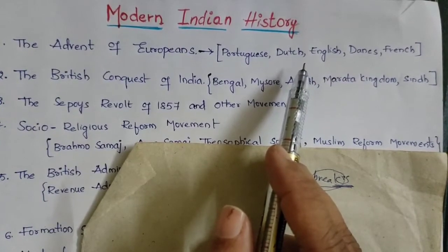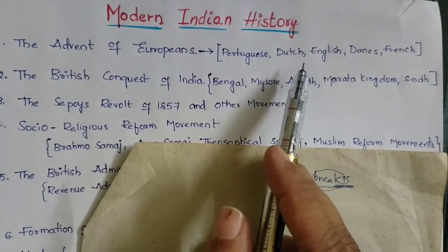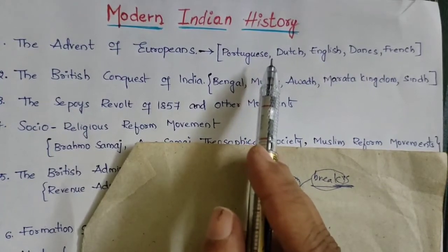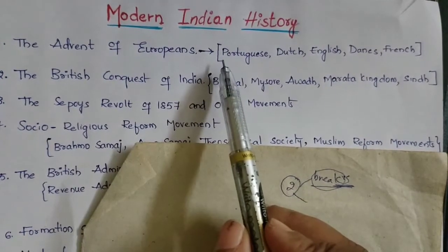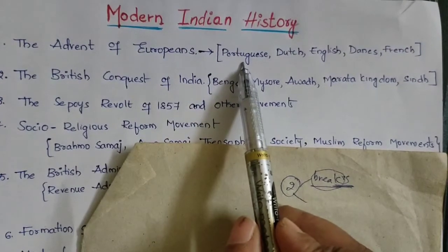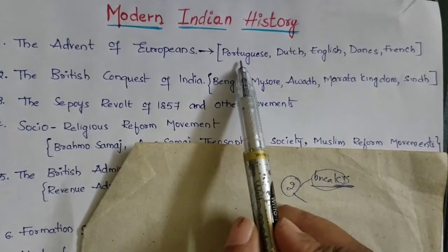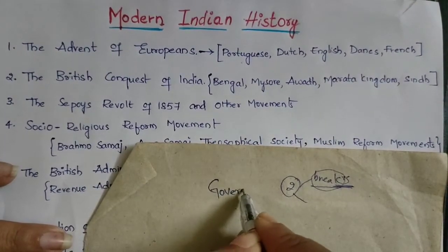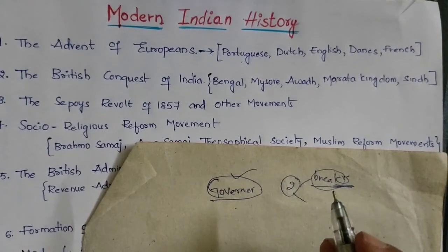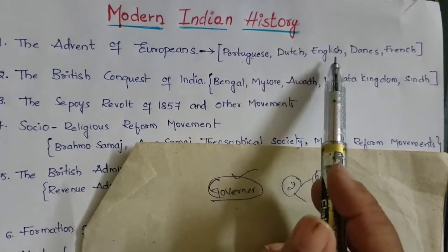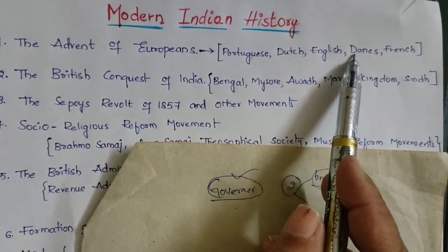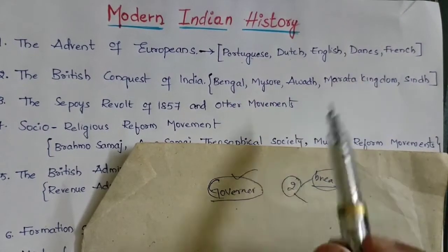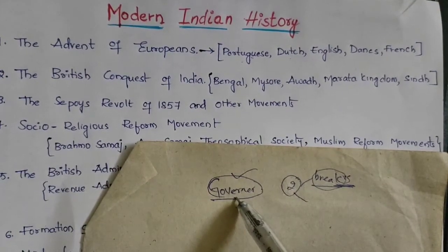The main thing is they needed to produce and trade products. First, they established factories. They tried to rule through these factories and used governors to manage their operations. The European powers involved were the Portuguese, Dutch, English, Danish, and French.